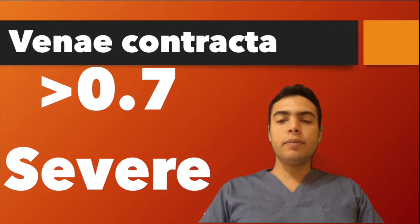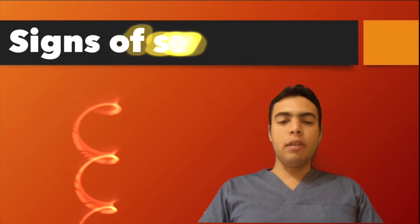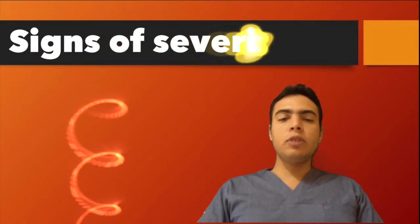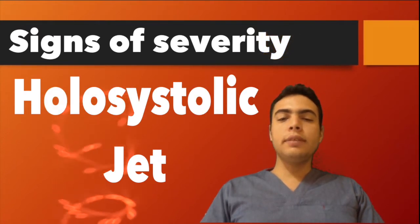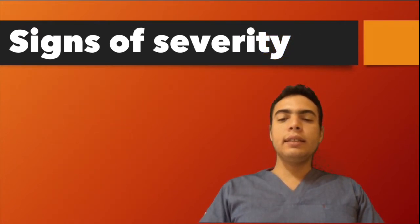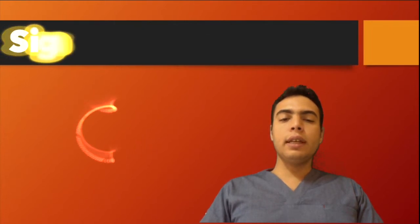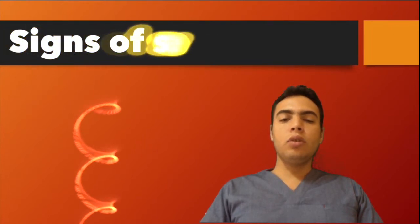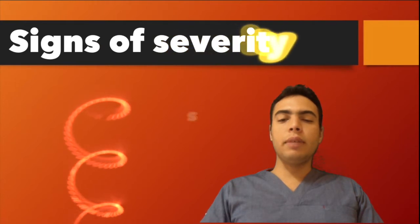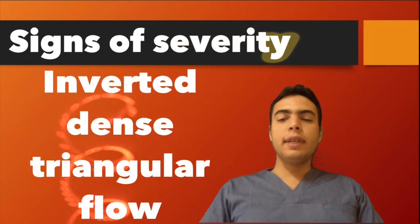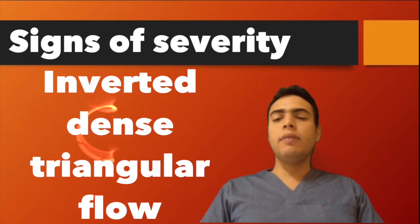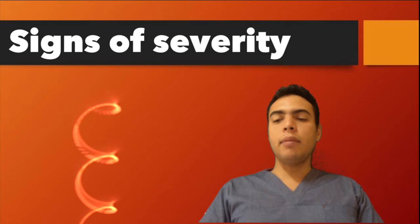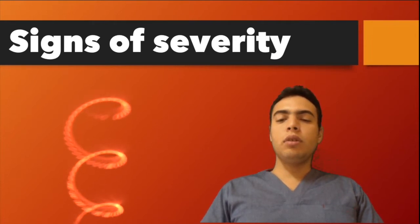If the vena contracta is more than 0.7 cm it is severe regurgitation. A holosystolic mosaic color jet seen throughout the whole systole also indicates severe regurgitation. On continuous wave Doppler, if the signal is dense and triangular the regurgitation is severe; if it is soft and parabolic the regurgitation is moderate or mild.